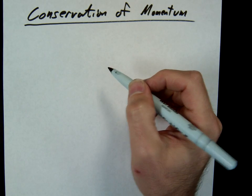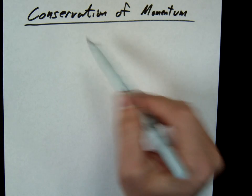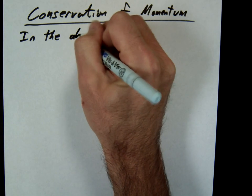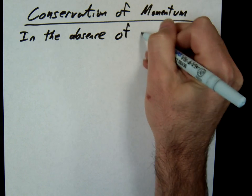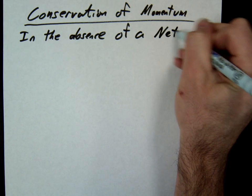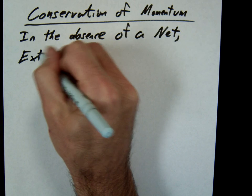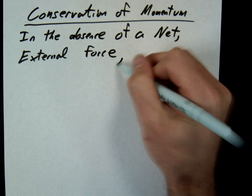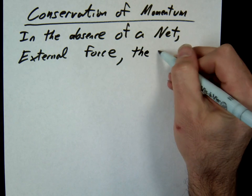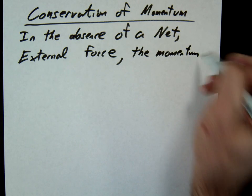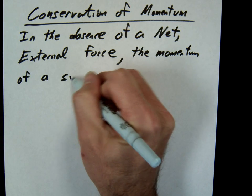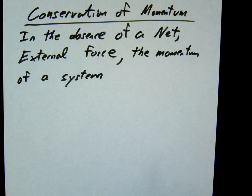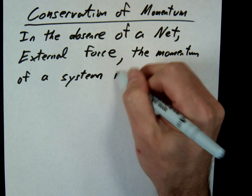I am going to write a caveat to this, because this is not always necessarily true. We're going to say, in the absence of a net external force, and we'll talk about that in a second, the momentum of a system, what do I mean by system, what do I mean by net external force, is constant.